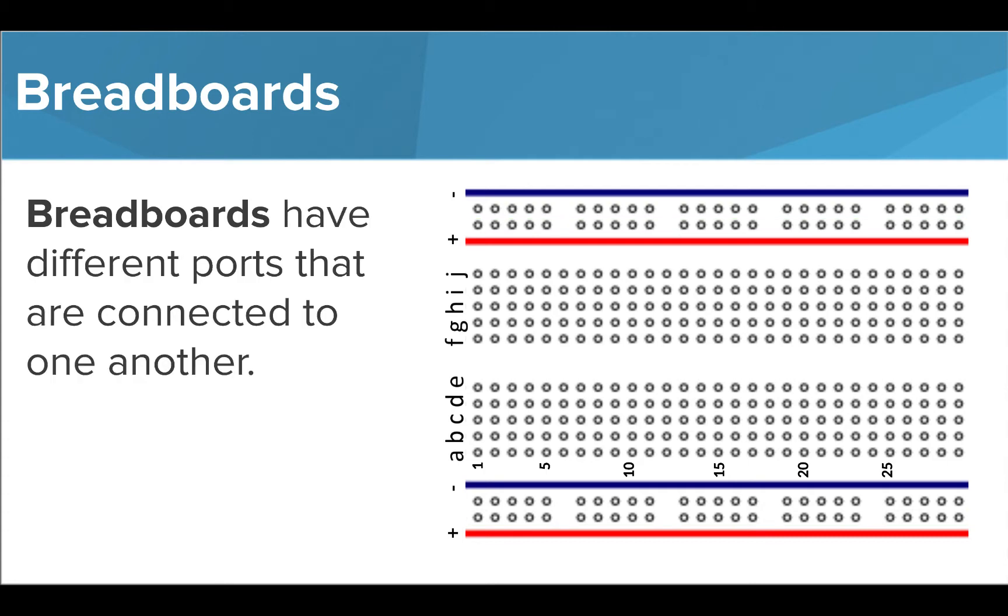Throughout the board, there are ports that are connected to one another via wire strips underneath the plastic. In order to fully understand how to use a breadboard, you'll need to understand and remember where these connections are. Let's take a look at them.